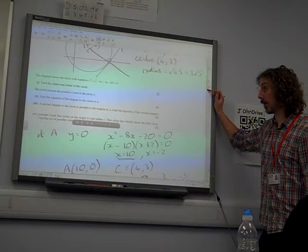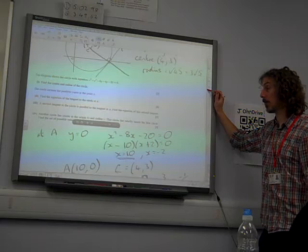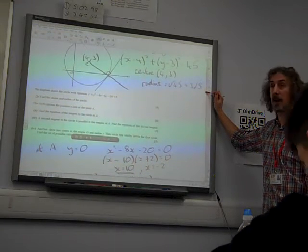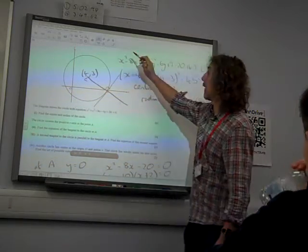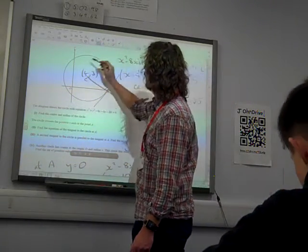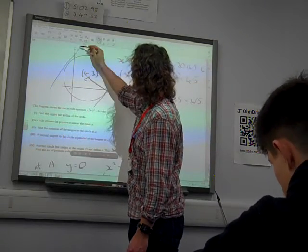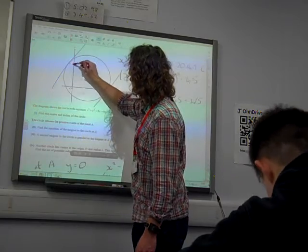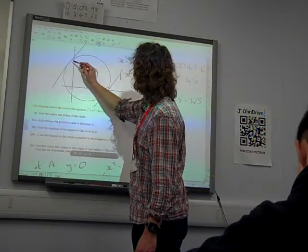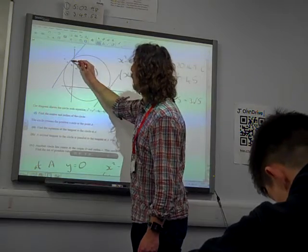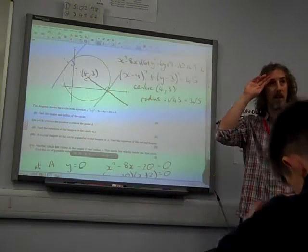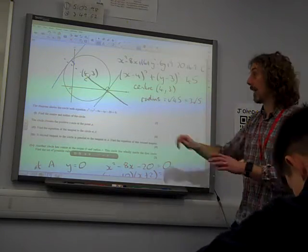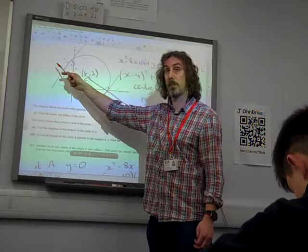A second tangent to the circle is parallel to the tangent at A. Find the equation of this second tangent. Alright, well if the second tangent, which is parallel to that one, the only way we could have a tangent that's parallel is that line if it didn't miss. Is the line up there? Yes. Where the other end of the same diameter meets that point. That's the point of Moskotha, isn't it? It's the other end of the same diameter.